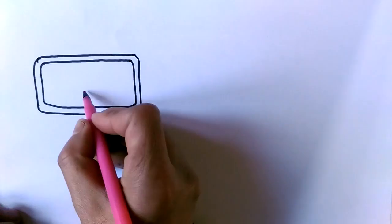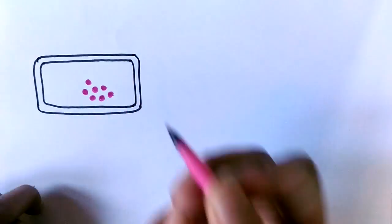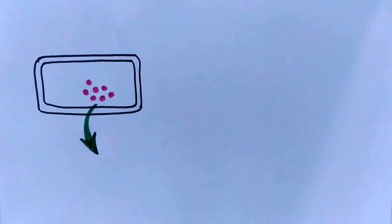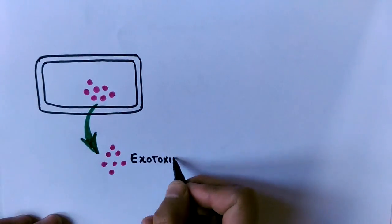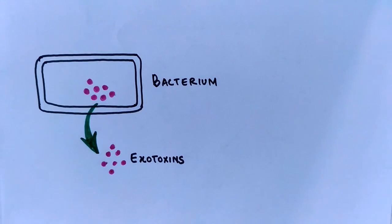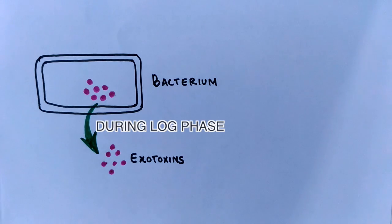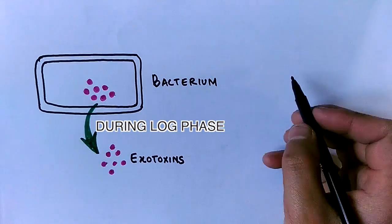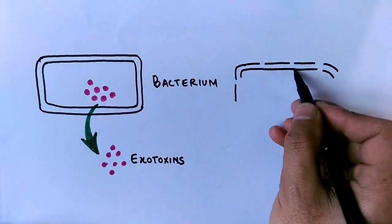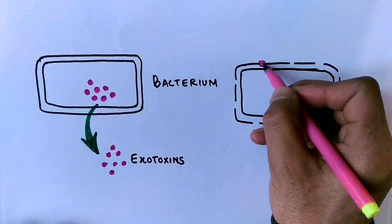As shown in this diagram, bacteria produce exotoxins inside and then secrete these exotoxins into their surroundings to infect other cells. It must be noted that the bacteria secreting these exotoxins are at the log phase. Finally, these exotoxins alter the function of nearby cells, thereby causing an immune response. This is the mechanism behind exotoxins.